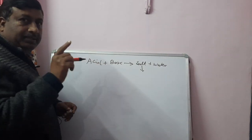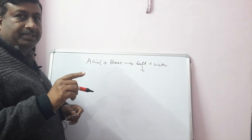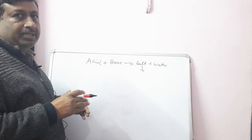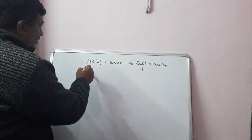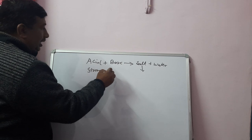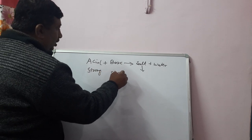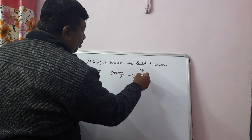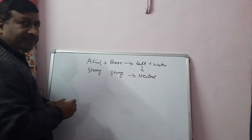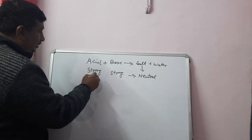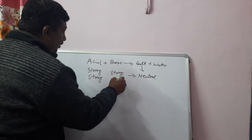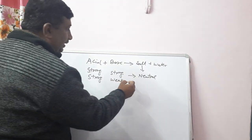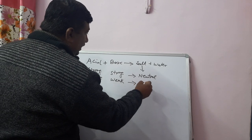The neutral, acidic, or basic nature of a salt depends upon the type of acid — whether it is strong or weak — and similarly whether the base is strong or weak. If acid is strong and base is strong, then the total acidity is neutralized by the base, so the salt is neutral. If acid is strong but base is weak, then the total acidity is not neutralized and the salt retains some acidity, so the salts are acidic in nature.